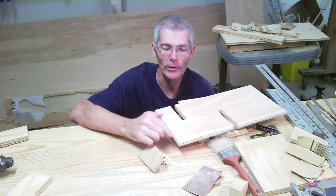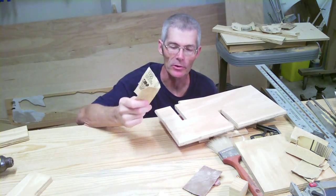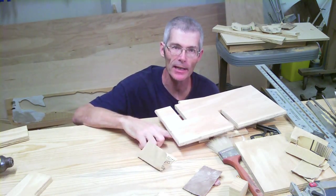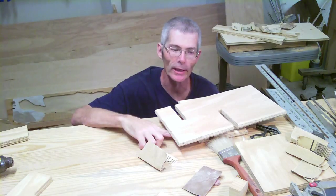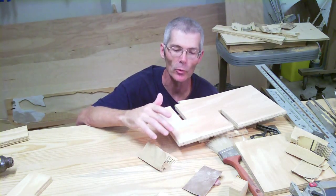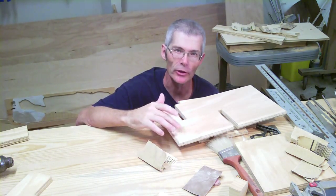Got all the edges rounded over. Now I'm finishing up with some sanding. The bottom side I'm just going to 100 grit. The face side doing 100, 150 and then 220.